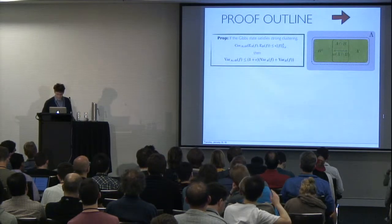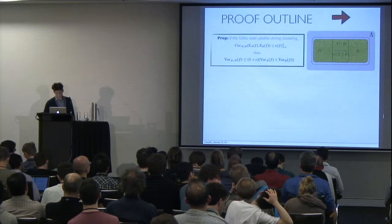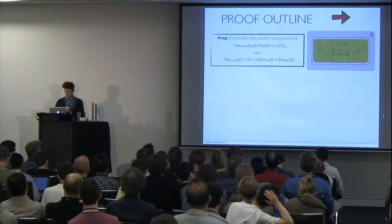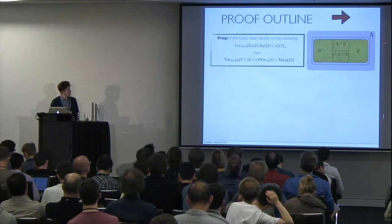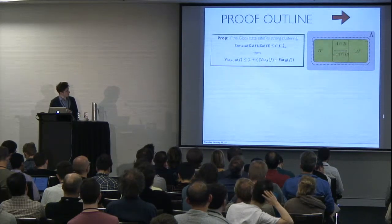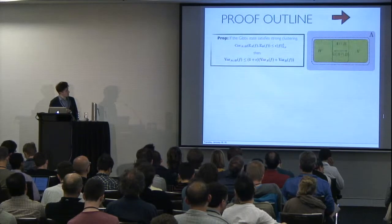Yeah, so the basic idea behind the proof is that you can decompose the variance on subsets A and B in this simple manner. So you almost have an additive upper bound.